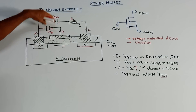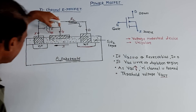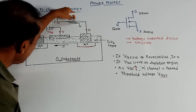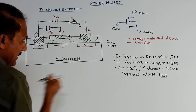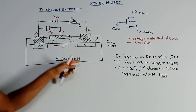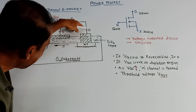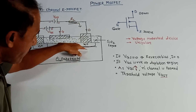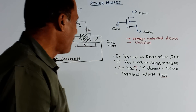Let us discuss the working of this device. Initially, we will keep VGS equal to 0, meaning this part is open circuited. But VDD is connected — the positive of VDD is connected to the N-plus region. Below the N-plus region there is a P-type substrate, forming a P-N junction. Since N is connected to the positive terminal of VDD, this forms a reverse biased junction, so there will be no flow of current.